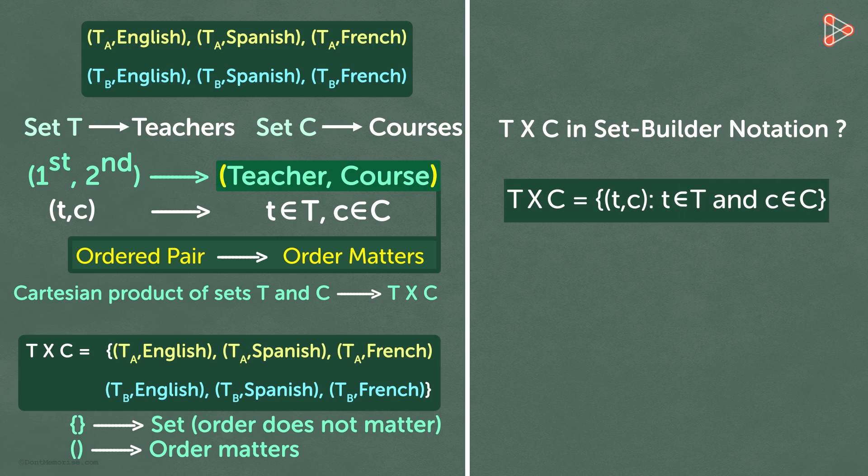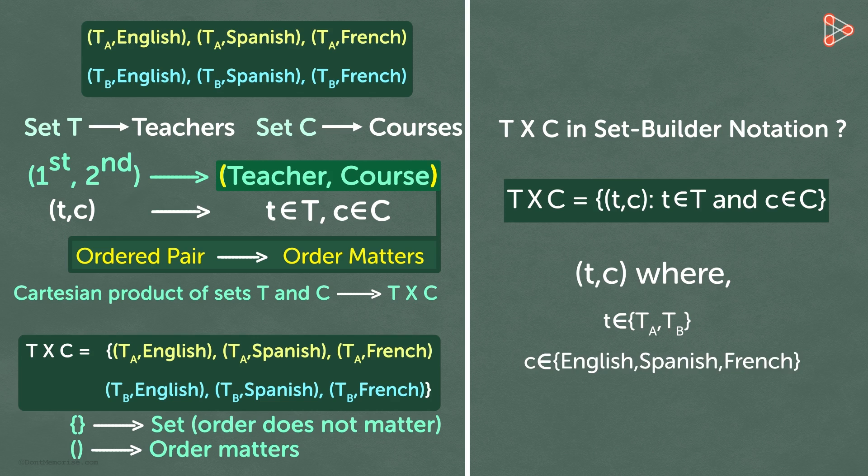Let's look at each of our ordered pairs to see if this condition is satisfied. Now, for each ordered pair of teacher comma course, teacher t belongs to set T with elements TA and TB, and course c belongs to set C with elements English, Spanish, and French. Each ordered pair in the set satisfies the condition.